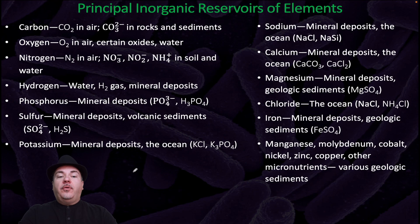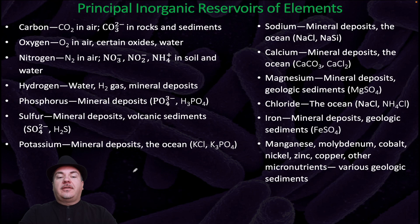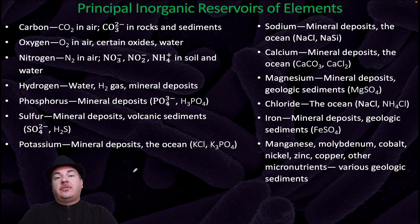So where do microorganisms get their inorganic reservoirs of elements? Some representative examples: carbon often comes from carbon dioxide in the air, oxygen comes from oxygen gas in the air, nitrogen can come from nitrogen gas in the air, hydrogen can come from water, while phosphorus, sulfur, and potassium can be found in mineral deposits.